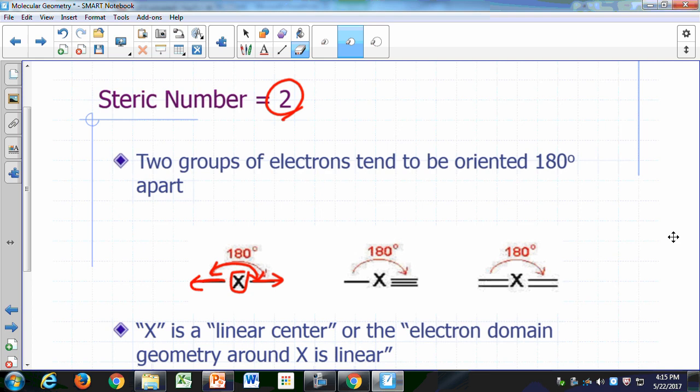You can have two single bonds sticking out of an atom, that would be a steric number of 2. Or you can have a single bond and a triple bond sticking out on opposite sides, or you can have two double bonds.